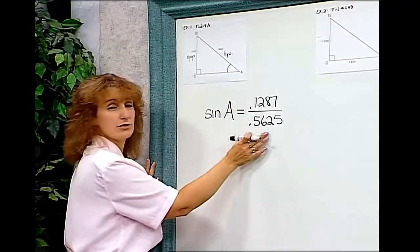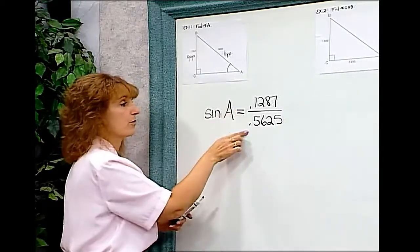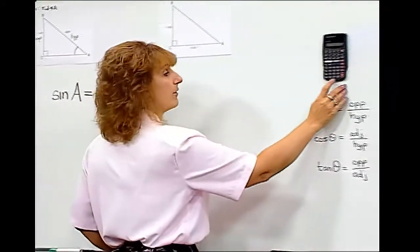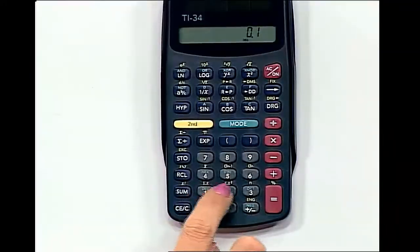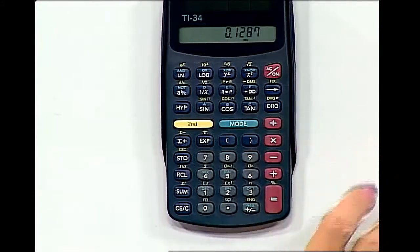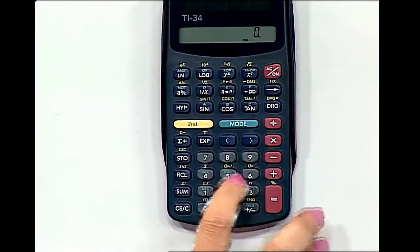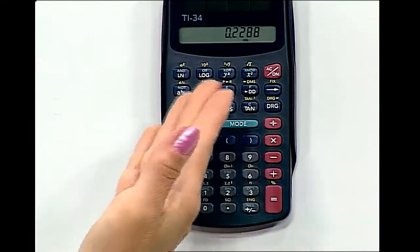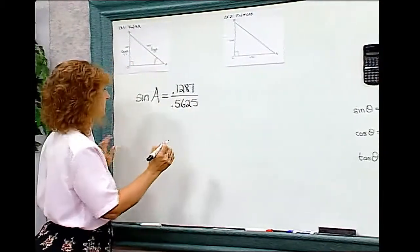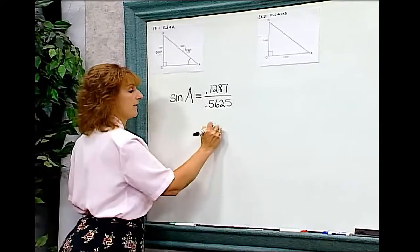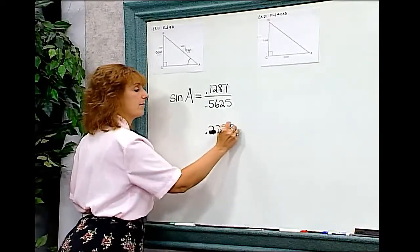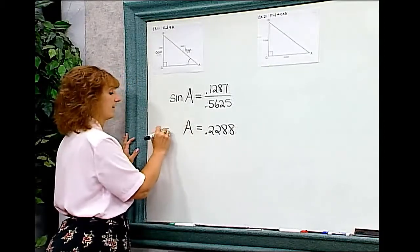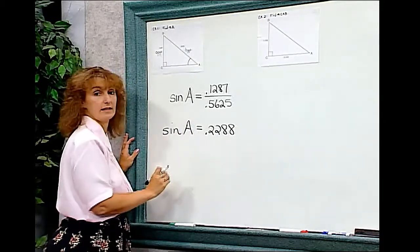I'm now going to use my calculator to find the quotient of these two numbers. I have 0.1287. I'm going to divide that by 0.5625, and I'm going to get 0.2288. When I write that down, I have to remember that that's not the answer for angle A. That's the answer for the sine of angle A.